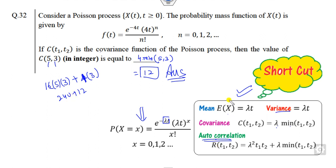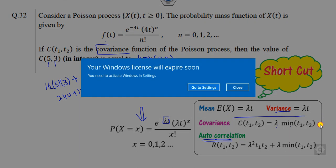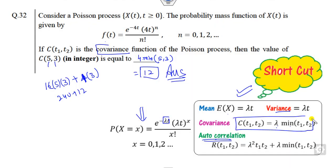Similarly, you can find the variance, but right now in this question they are asking about the covariance. So you can apply this shortcut trick. The covariance is λ min(t₁, t₂), and this is the right answer. I hope you can learn and use this shortcut trick in your future examinations.